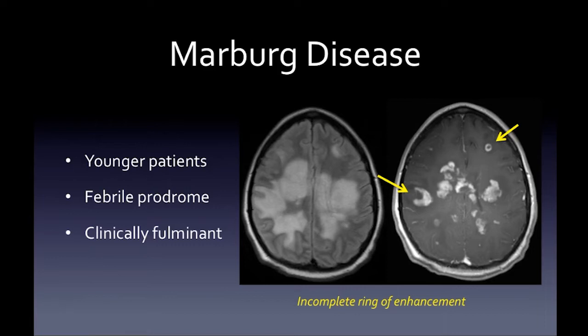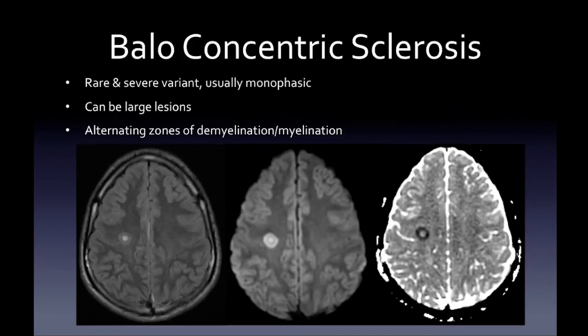Marburg disease is a clinically fulminant variant of demyelinating disease, usually in younger patients with a febrile prodrome. You can see widespread demyelination, but some lesions show the incomplete ring of enhancement — the tip-off that this is a demyelinating process rather than something infectious or metastatic. Balo concentric sclerosis is another rare and severe variant, usually monophasic, with lesions showing alternating zones of demyelination and remyelination — a target-like appearance.